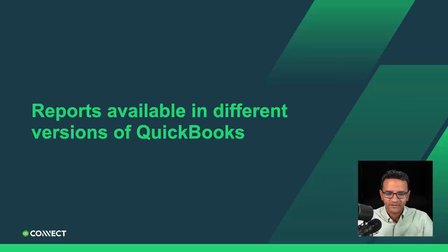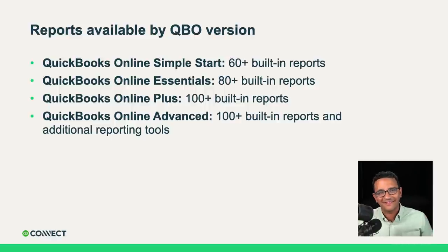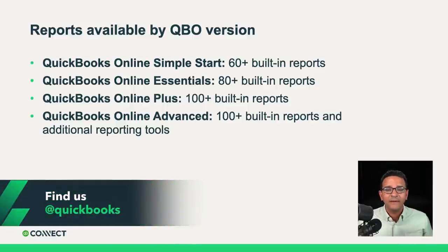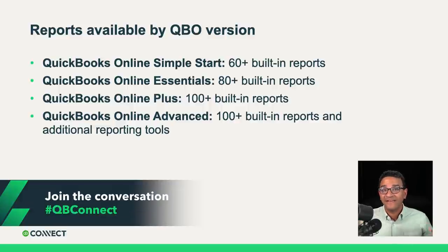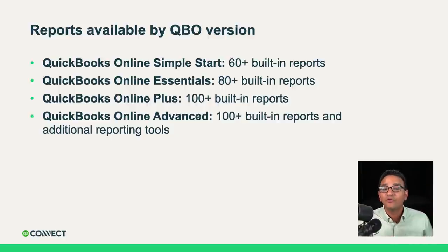Let's get started with reports available across multiple versions of QuickBooks. QuickBooks Online has multiple subscription versions. The simplest is called Simple Start and the most advanced is called Advanced. Simple Start gives you all your basic financial reports — over 60 built-in reports. Regardless of which version you have, everything you need to analyze financial statements and prepare tax returns will be available. However, as you move up in the subscription scale, there will be more reports and reporting tools available.